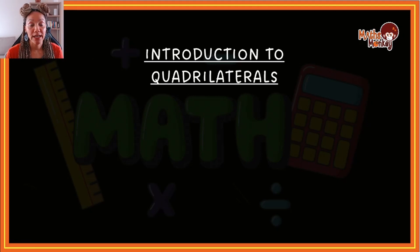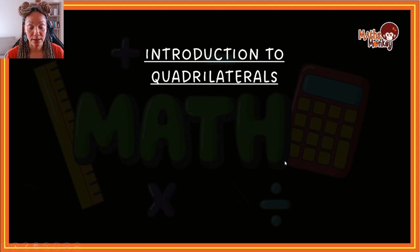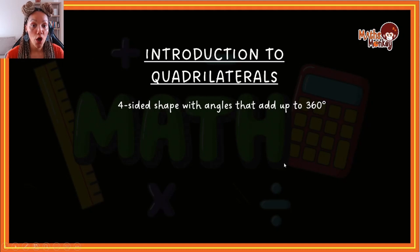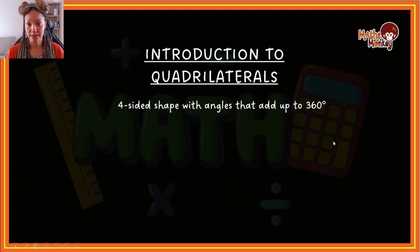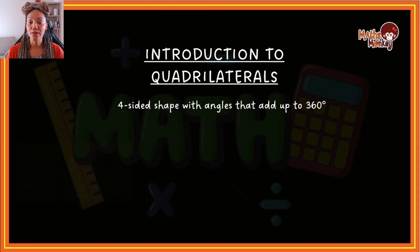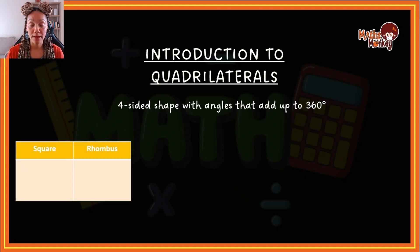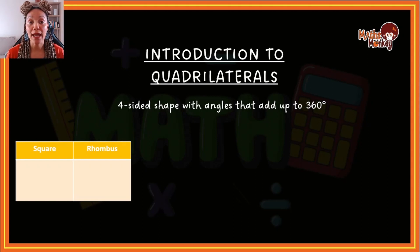So we're going to start off by looking at quadrilaterals. A quadrilateral is a four-sided shape with angles that add up to 360 degrees. The triangle adds up to 180, but a quadrilateral adds up to 360 degrees. There are six quadrilaterals that you are expected to know. I like to group them in pairs and I will be covering them in pairs in my videos, because I find it's a lot easier to remember them that way. So the square and the rhombus we're going to learn about together.